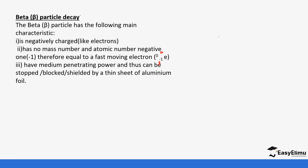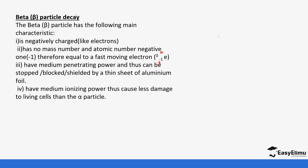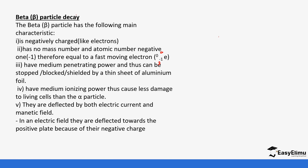The beta particle has medium penetrating power, thus it can be stopped by a block of aluminium sheets. It can pass through paper comfortably, but when it meets a block of aluminium sheet it cannot pass — it is stopped. It has medium ionizing power, so it causes very little damage to living cells in comparison to the alpha particle. It is deflected by both electric and magnetic fields.